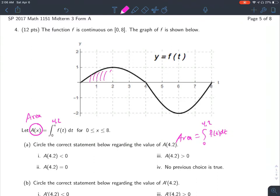If you look from 0 to 4, this is all above. And then from 4 to 4.2, it's certainly below. There's much more area above than below. So we are saying that the area has to be positive from 0 to 4.2.